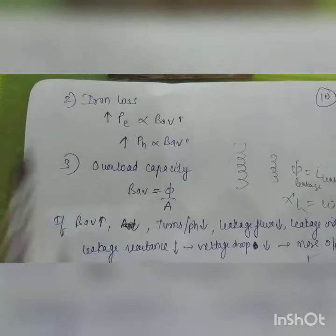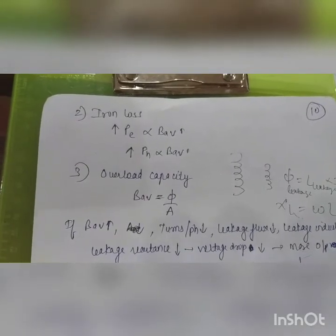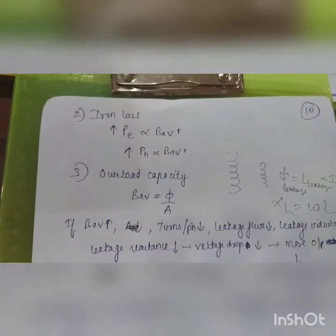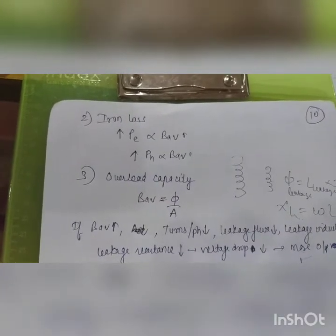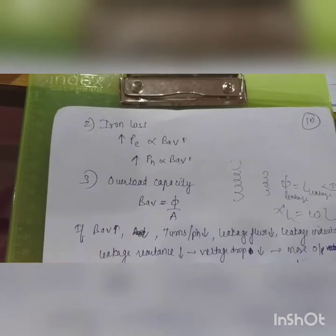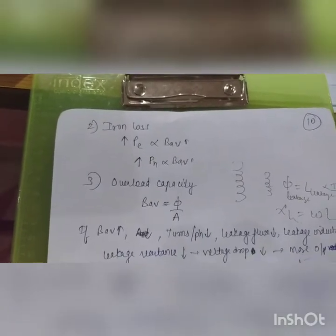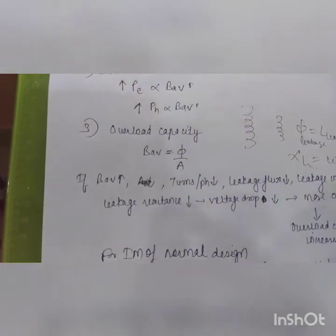The next factor is iron loss, which has two sub-types: hysteresis loss and eddy current loss. Both depend on average flux density. If high average flux density is used in the induction motor, both eddy current loss and hysteresis loss increase, generating more heat.